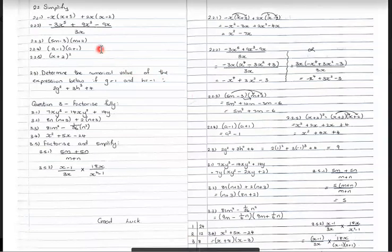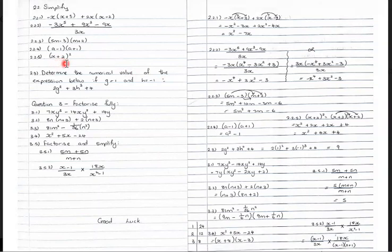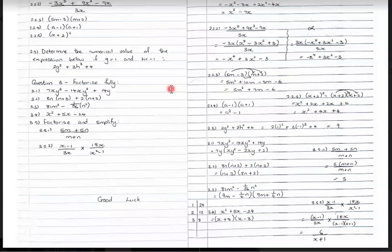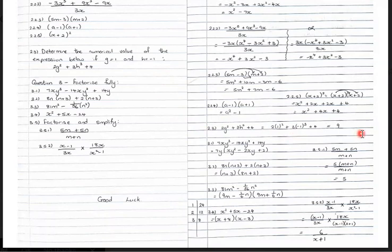A squared minus 1, because 1 times 1 gives just 1. For the next part, you have (a plus 2) raised to the power 2, meaning you repeat the brackets: (a plus 2)(a plus 2). Using FOIL, you arrive at a squared plus 4a plus 4. For question 2.4, substitute g equals 1 and h equals negative 1 into the expression, earning a mark for substitution; the answer is 9.